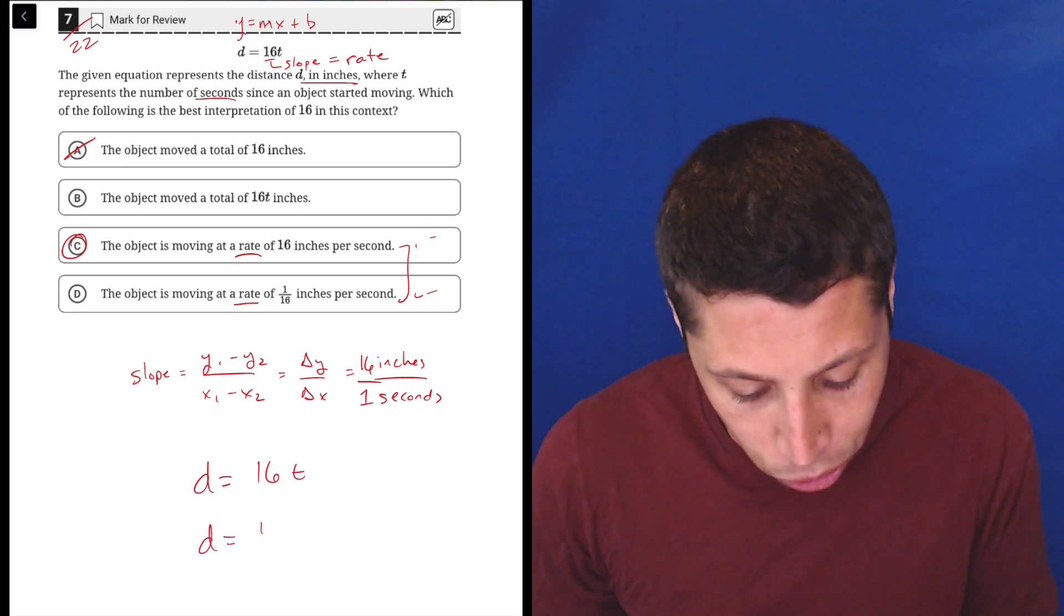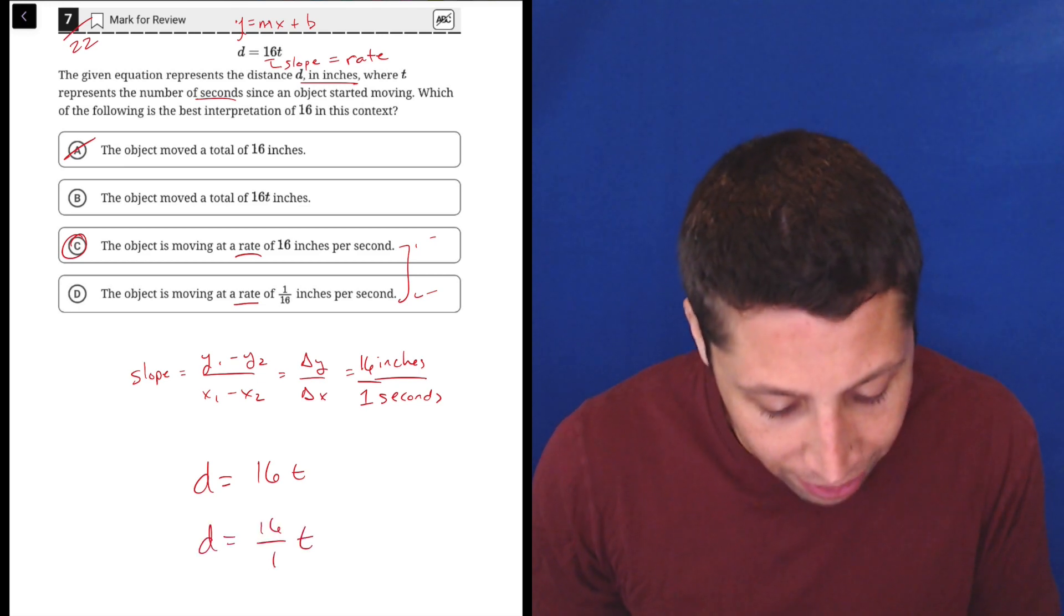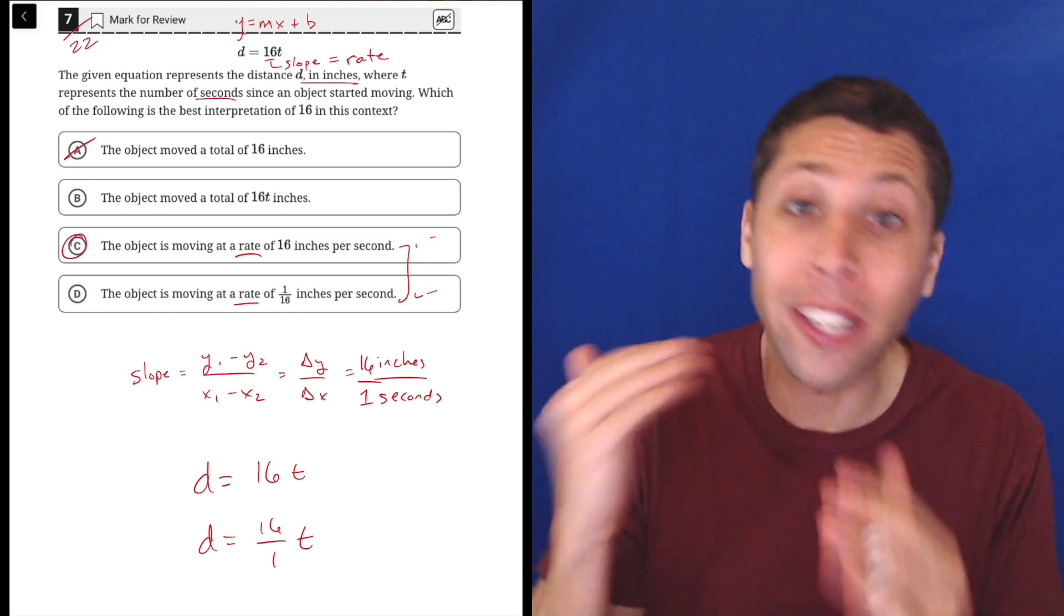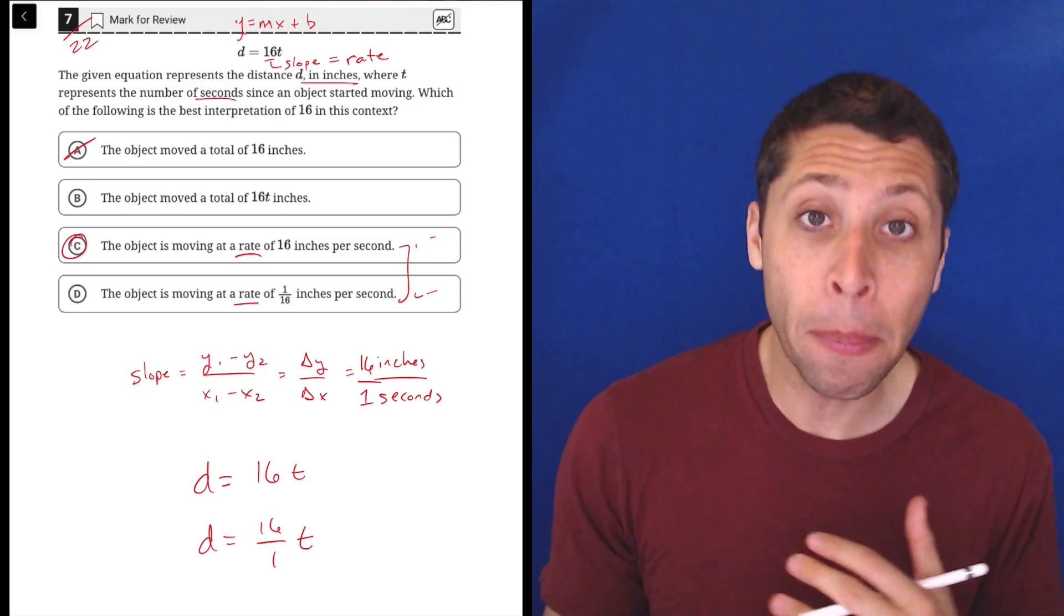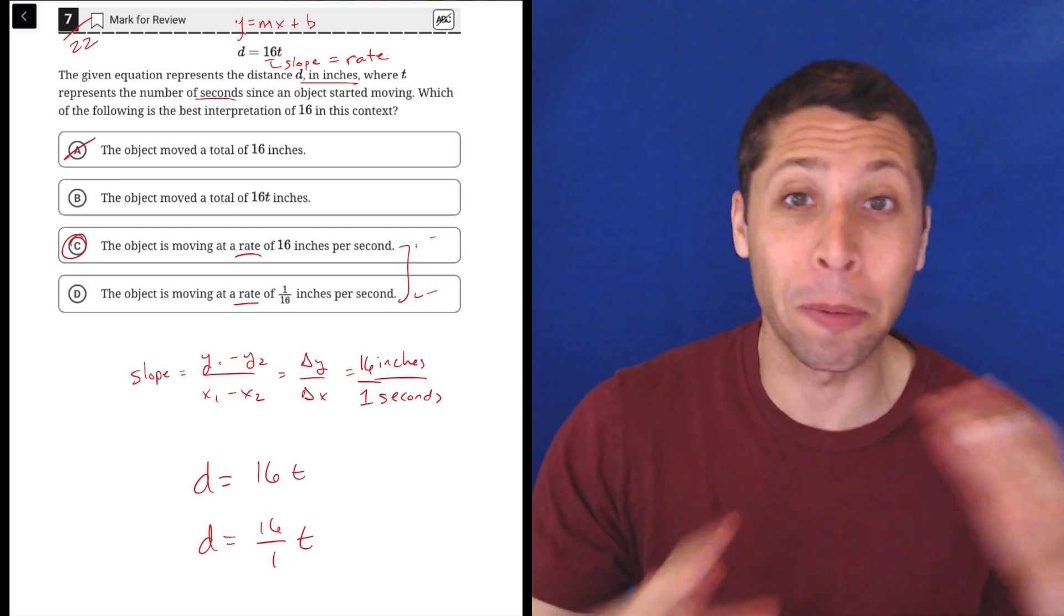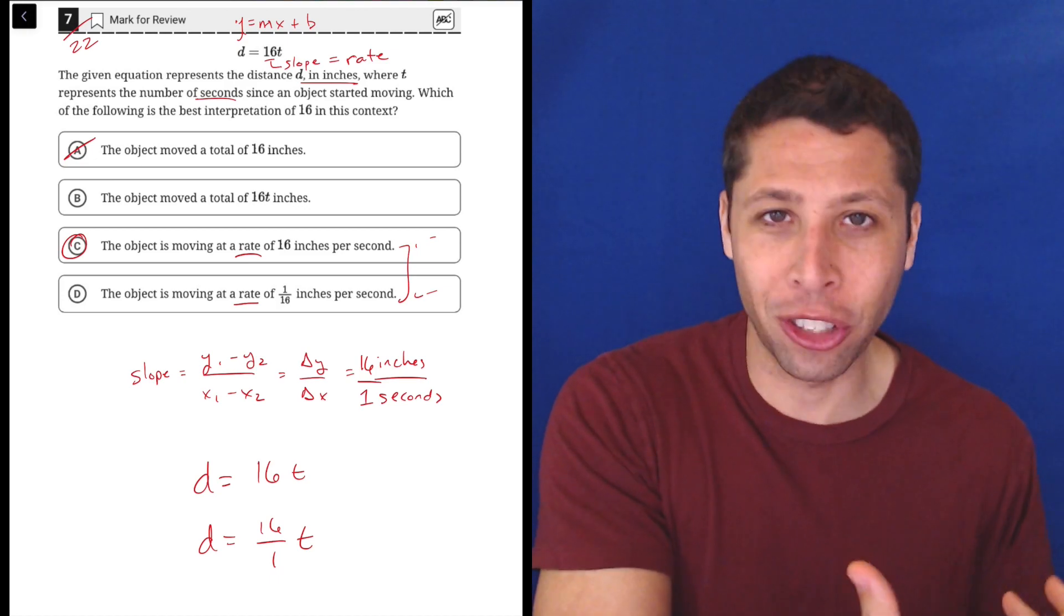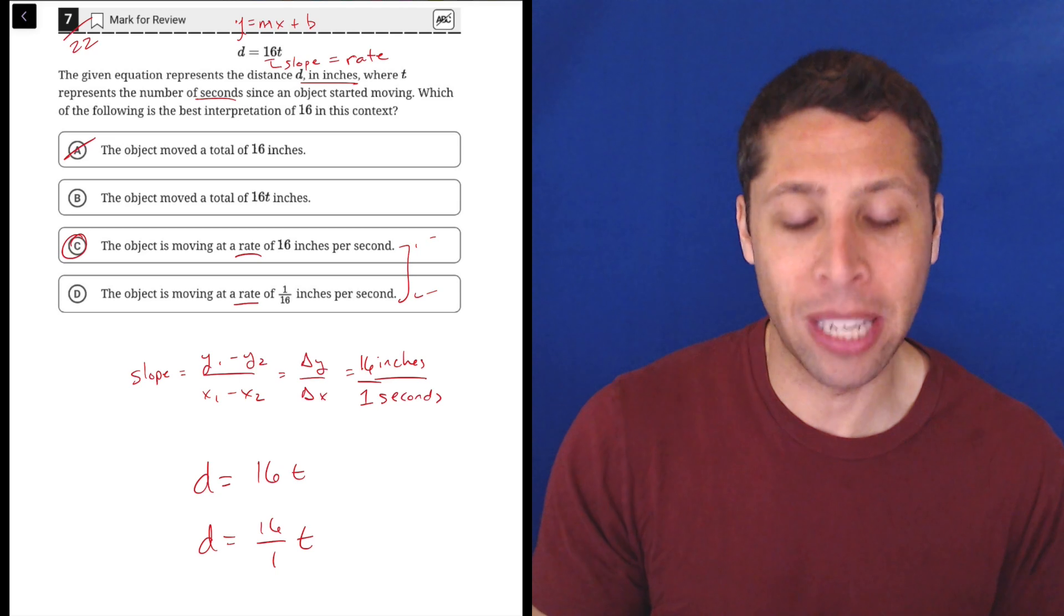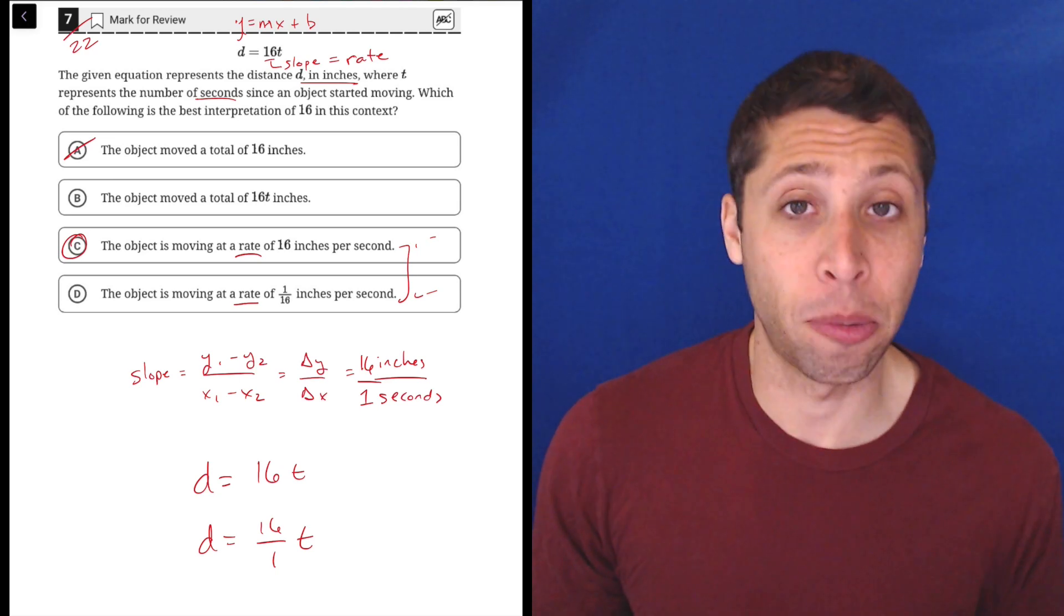Basically I'll just write it down here: if D is equal to 16T, another way to think of that is D equals 16 over 1 times T. So by picking choice C we're preserving that the one is on the bottom. Choice D would be flipping it. I could see on a harder question later in the section that might be required because the way they asked the question might force us to rearrange the equation, but again this is number seven, it's supposed to be easy.